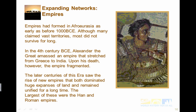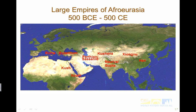Empires had formed in Afro-Eurasia as early as 1000 BCE. Although many claimed vast territories, most didn't survive long. In the fourth century BCE, Alexander the Great built a huge empire that stretched from Greece to India, but when he died it began to fall apart. Later centuries saw the rise of new empires that dominated huge expanses of land and remained unified for a long time — the largest being the Han and Roman empires. Other large empires include Rome, the Byzantine Empire, Cush, Axum, Parthian and Sassanid, Kushana, Maurya/Gupta, Xiongnu, and the Han.